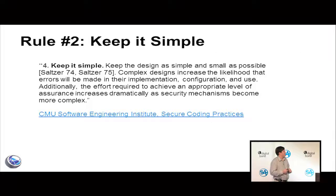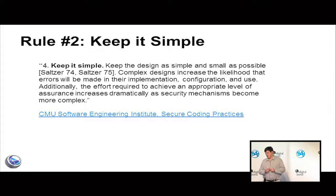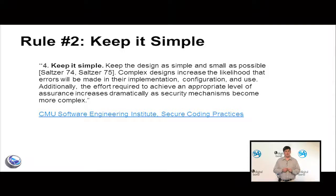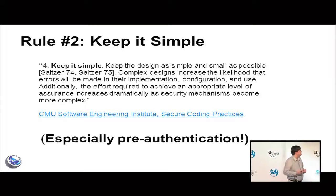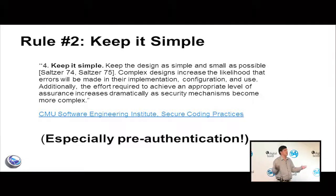You should separate authentication from authorization. Rule number two: keep it simple. This is from Carnegie Mellon's Secure Software Engineering Institute: 'Keep the design as simple and small as possible. Complex designs increase the likelihood that errors will be made in their implementation, configuration, and use. The effort required to achieve an appropriate level of assurance increases dramatically as security mechanisms become more complex.' Keep it simple, especially pre-authentication. Bugs found after authentication are not nearly as severe.